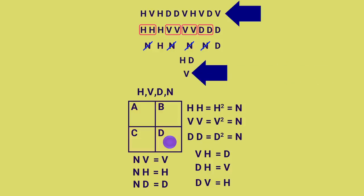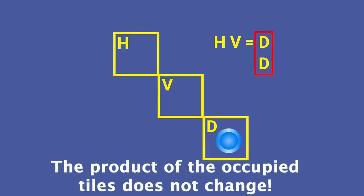The cool part of this is this group combination is preserved as we play the solitaire game. For any three diagonal tiles, I'll label them with three different letters. Then we'll put two pegs on the tiles, and these cover H and V, which combine to D. After I do a jump, we remove one peg, and the remaining one is on D, which matches how we started. The product of the occupied tiles did not change after the jump, and that will always be the case.